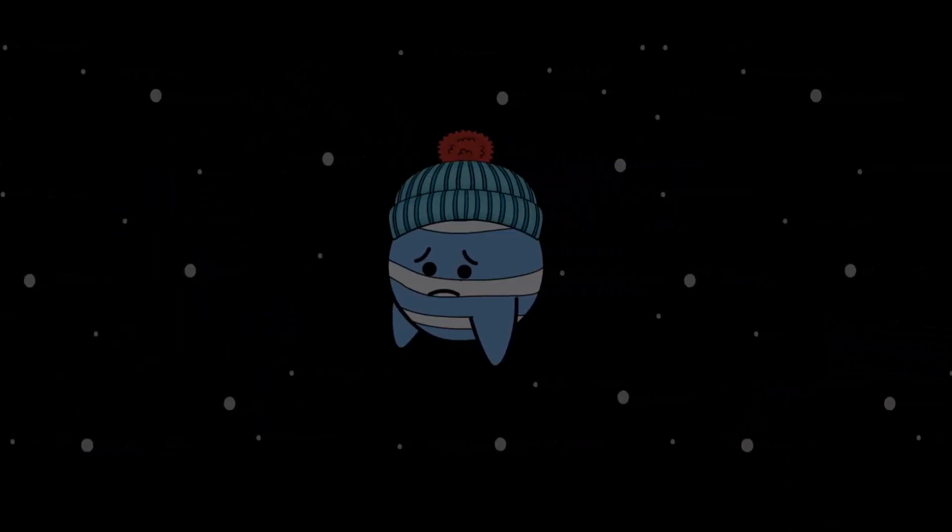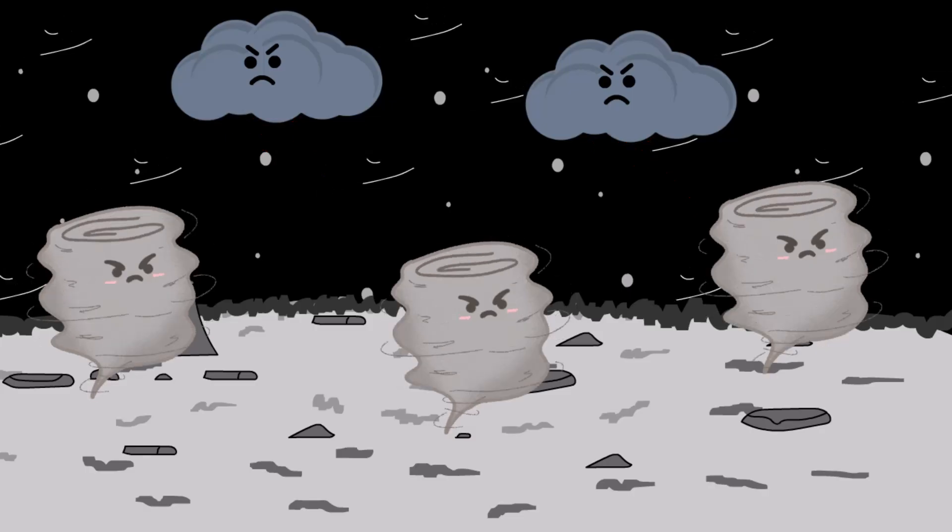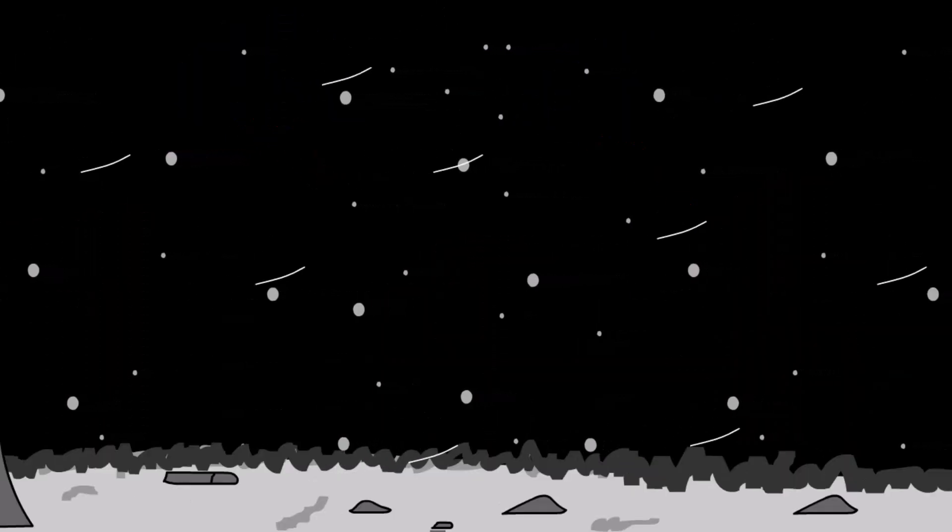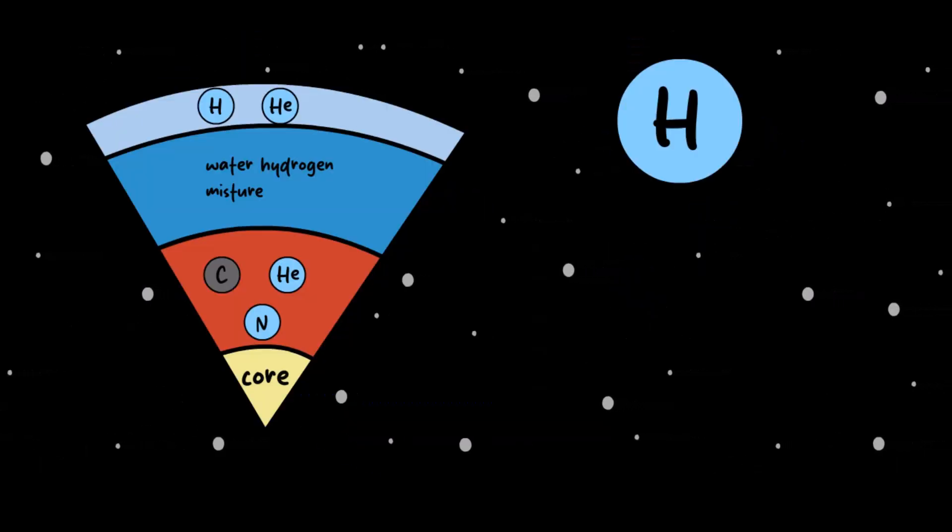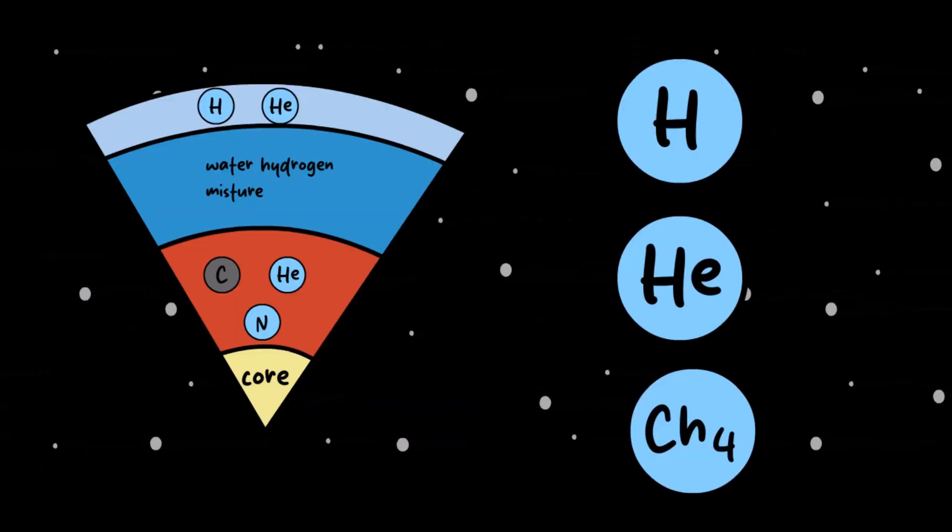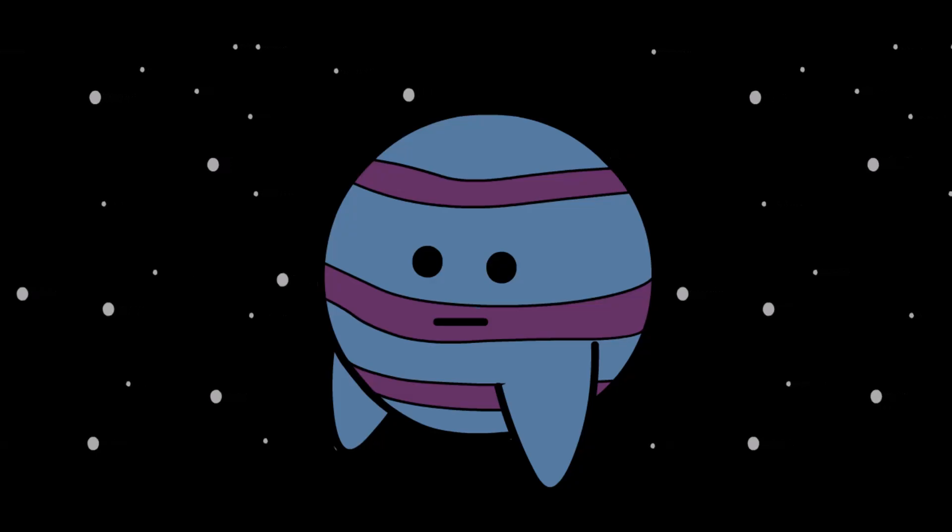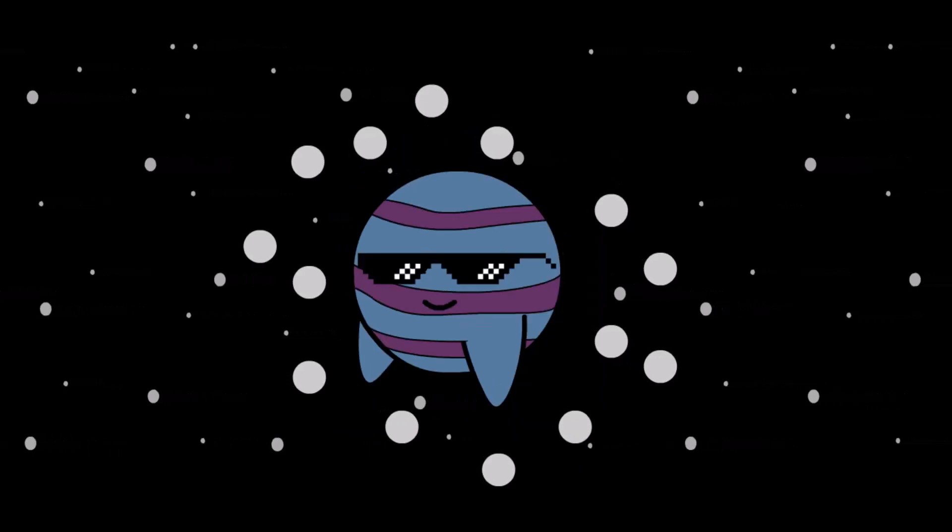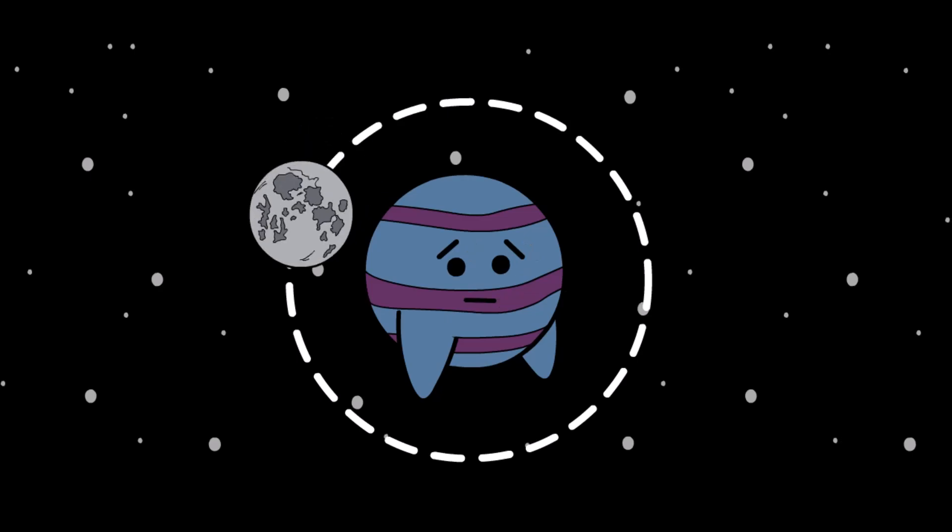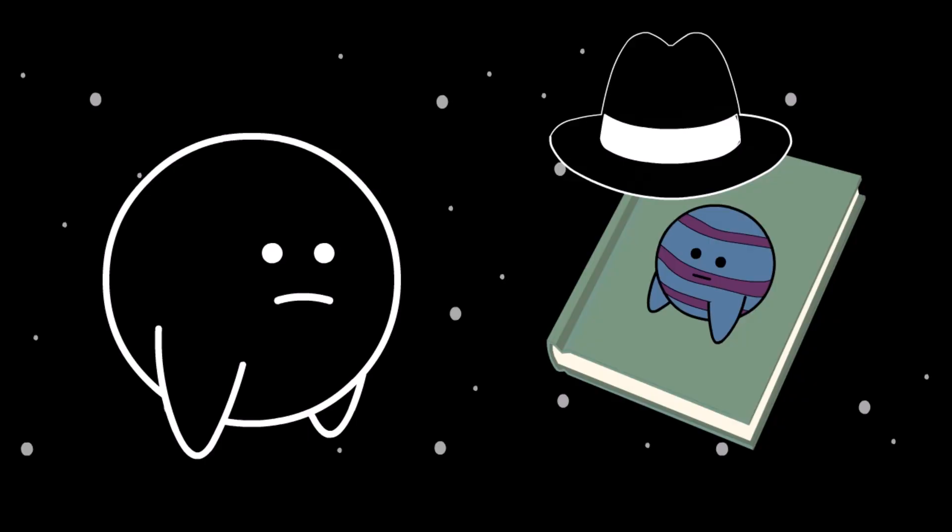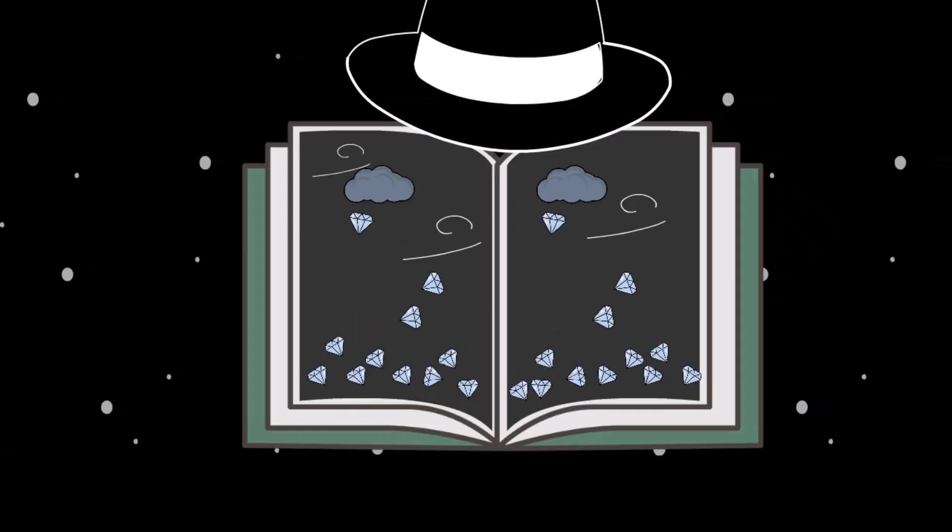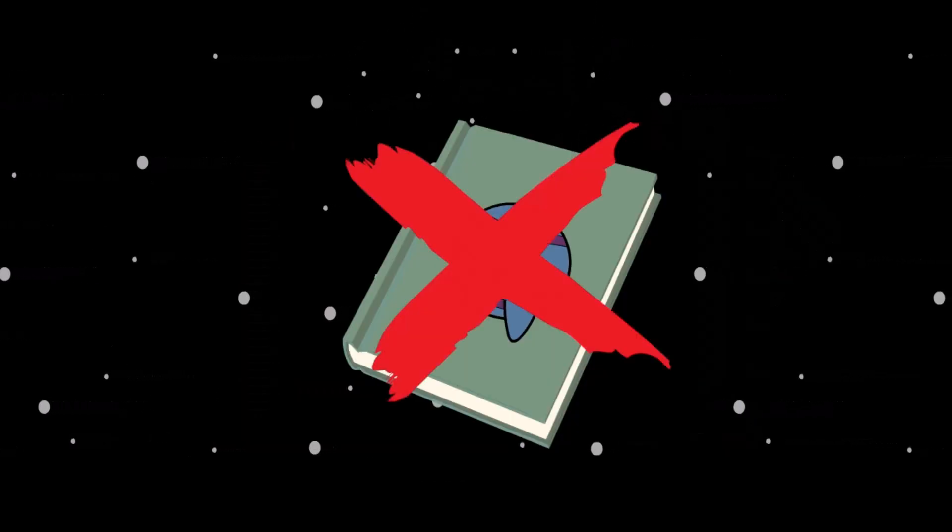It's not like Neptune doesn't have anything interesting to offer. It has insane weather with the fastest winds in the solar system. It rains diamonds. Its atmosphere is wild, made of hydrogen, helium, and methane, and it's deep blue for a reason. It has 14 moons, including Triton, which orbits the wrong way and might crash into Neptune one day. This planet is like the perfect mystery novel: dark, intense, and full of surprises. But no one's reading it.